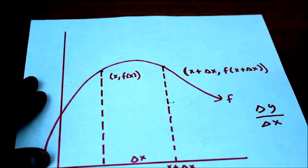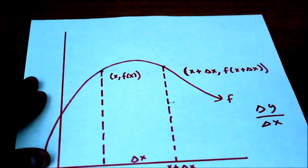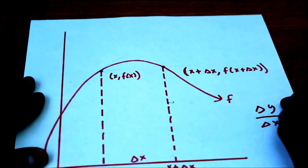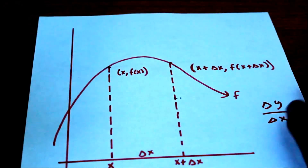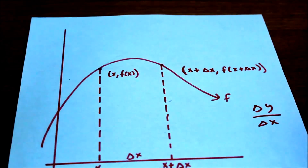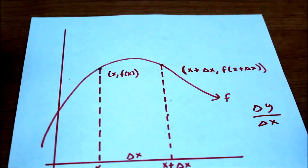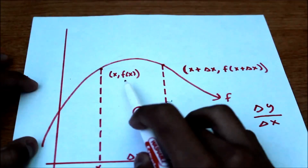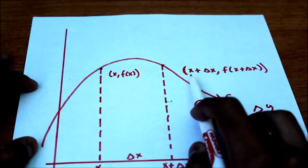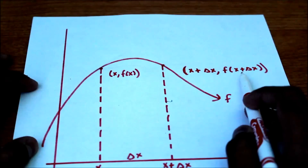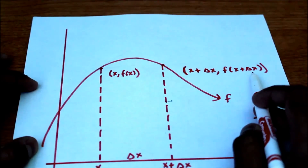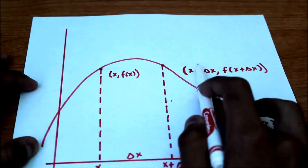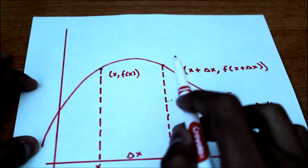You should recognize this as something very familiar — it's slope, a rate of change. It's the slope connecting the points x comma f of x and x plus delta x comma f of x plus delta x. So it's the slope of the secant line connecting these two points.